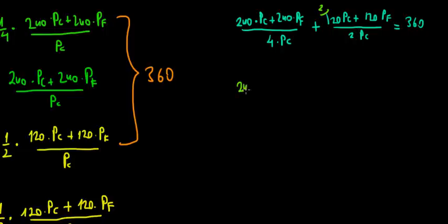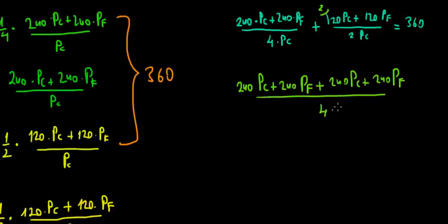What are we going to have now? We have 240 price of clothing plus 240 times price of food plus 2 times 120, that's 240 price of clothing plus 240 price of food, divided by 4 times the price of clothing, equals to 360.